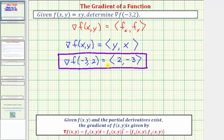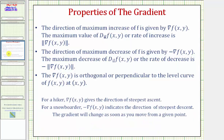Now let's talk about what this means and look at it graphically. The direction of maximum increase of f is given by the gradient of f. As an example, for a hiker, the gradient of f gives the direction of steepest ascent. The maximum value of the directional derivative, or rate of increase, is equal to the magnitude of the gradient of f.